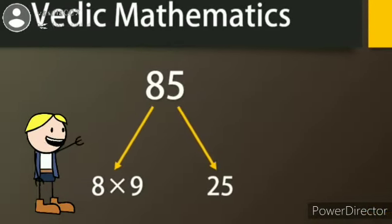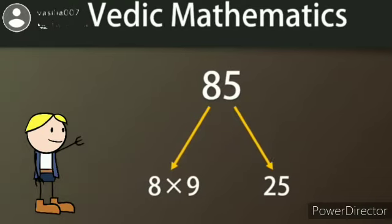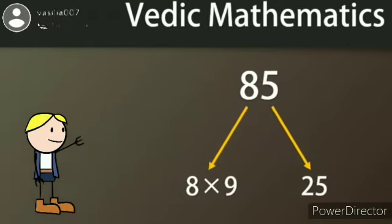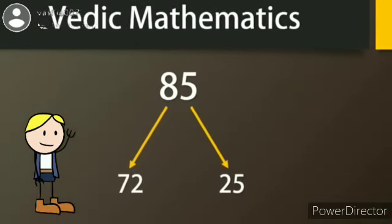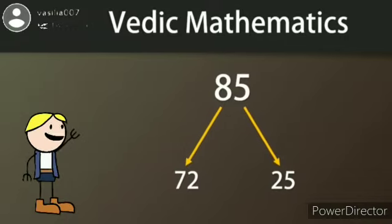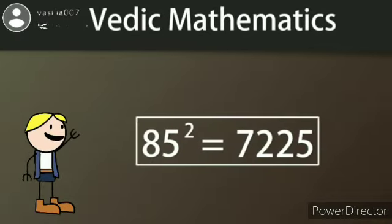Then, multiply 5 into its own number, that is 5 into 5, and write it in the right side. Now, we will multiply 8 into 9, 72, and 5 into 5, 25. And the answer for 85 square is 7225.